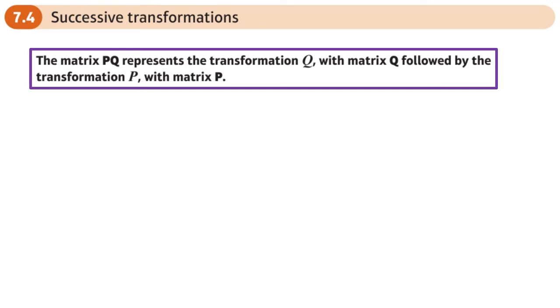This is the full section of the linear transformation chapter, and this is about successive transformations. So this is about carrying out one transformation followed by another. And the most important thing about this is the order in which you do it.